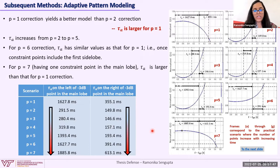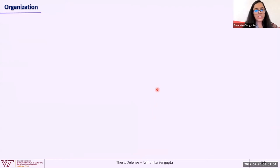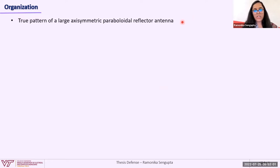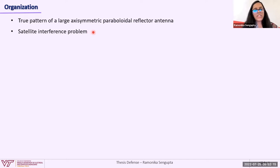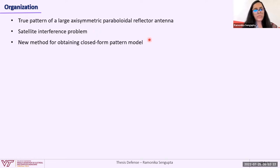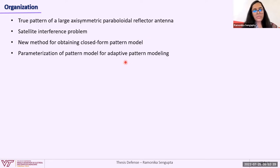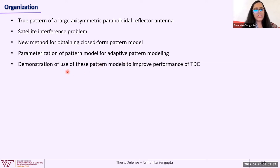Now that I have given highlights of the main results, I'll explain the technical details behind them. The presentation is organized as follows: first, defining the true pattern of a large axisymmetric paraboloid reflector antenna as a baseline; then characterization of the satellite interference problem and adverse effects of pattern variation on TDC; then a new method for obtaining a closed-form expression; then parameterization for the pattern model; and finally, demonstration of the use of the pattern models to improve TDC performance.